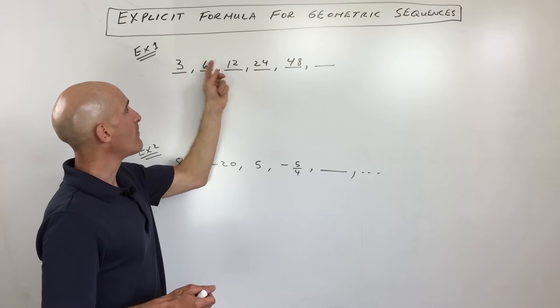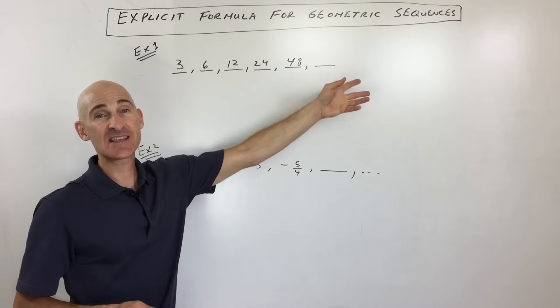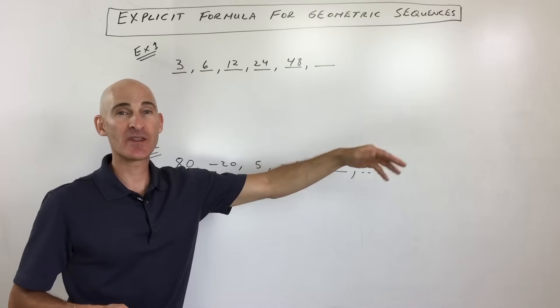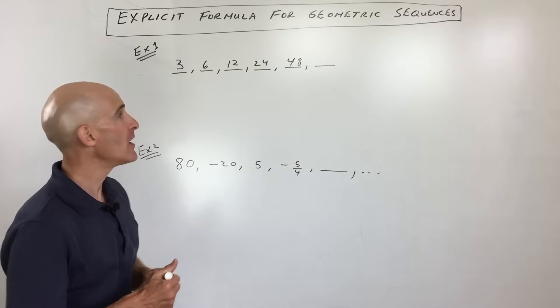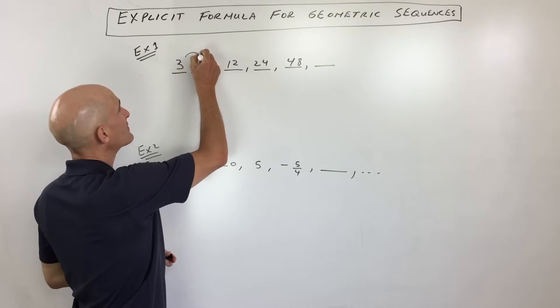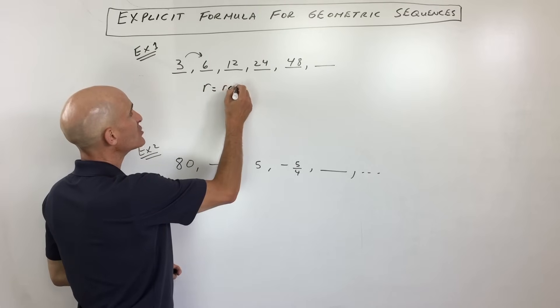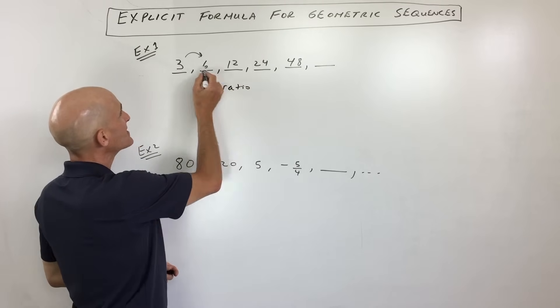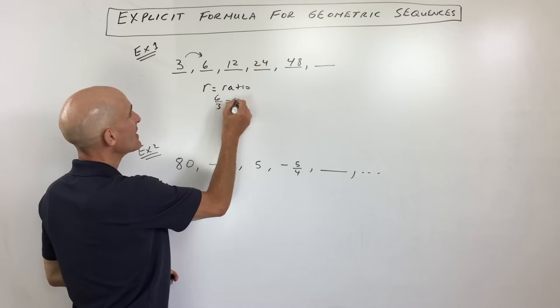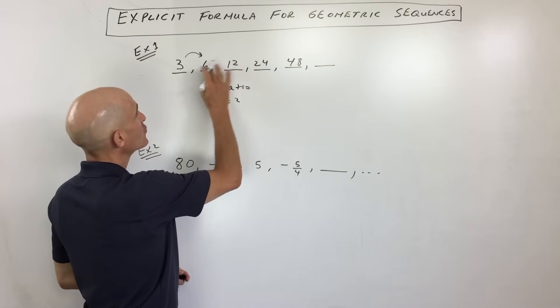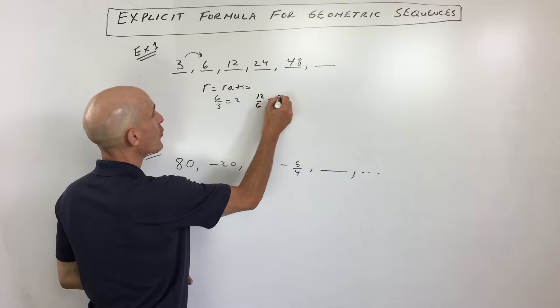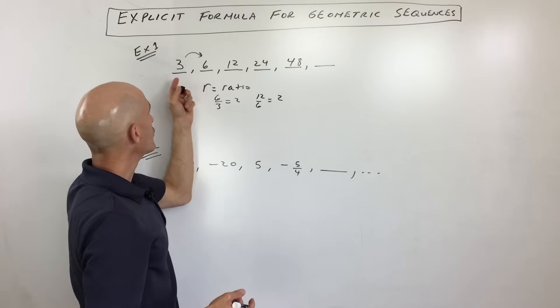And geometric means that we're multiplying by the same quantity to get to the next term, and then the same quantity to get to the next term, etc. That term that you're multiplying by to get to the next term is called the ratio. We use the letter R for ratio. So if you take 6 divided by 3, you see how you get 2? That's a ratio. 12 divided by 6, you're also getting 2. That's a ratio. So that's our R value.